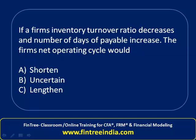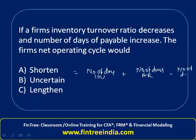A tricky question: a firm's inventory turnover ratio decreases and number of days payable increases — what happens to the net operating cycle? Let's first understand how the net operating cycle is calculated. The net operating cycle, also called the cash cycle, equals number of days in inventory plus number of days in accounts receivable minus number of days in payables.